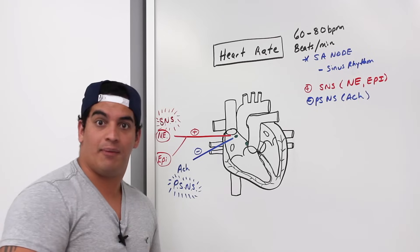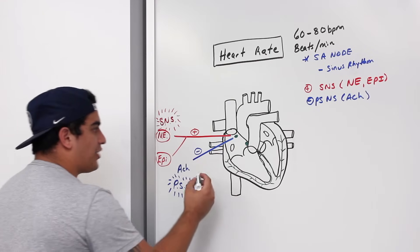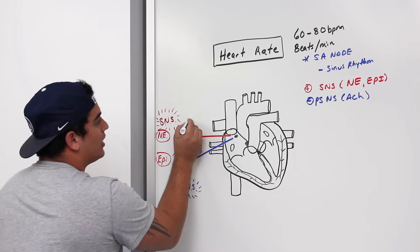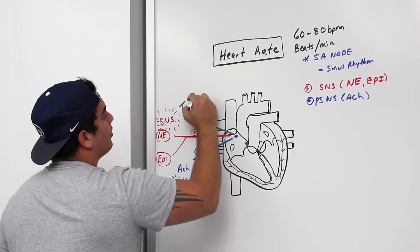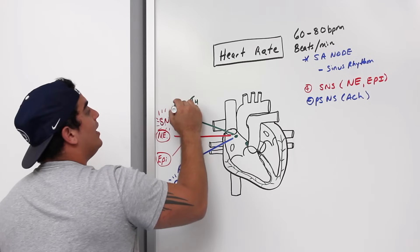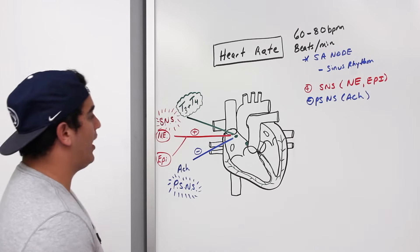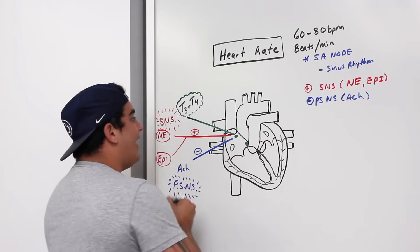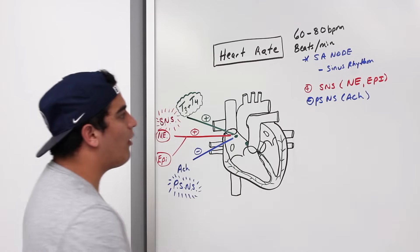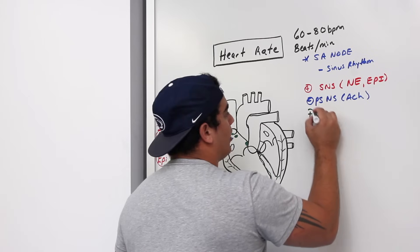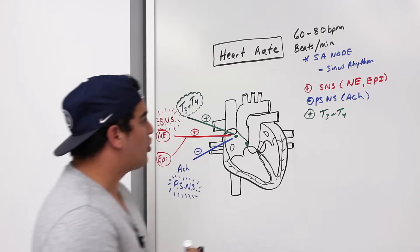Hormones also affect heart rate. Thyroid hormone — T3 and T4 — is a very powerful regulator that can increase heart rate. It's one of the positive regulators we need to know.